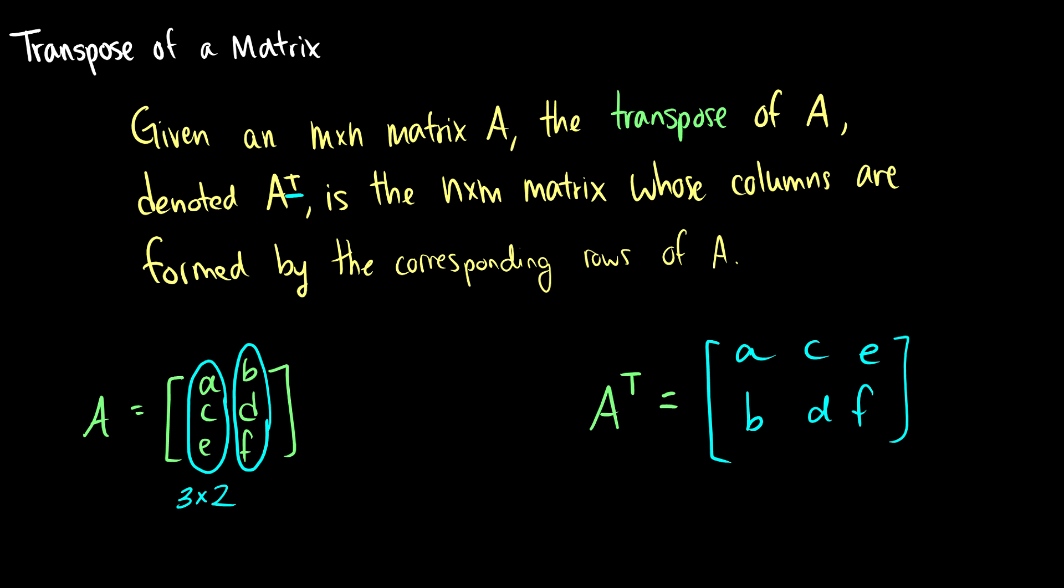So if the matrix A is 3 by 2, then the transpose is 2 by 3. So all of the indices flip around.